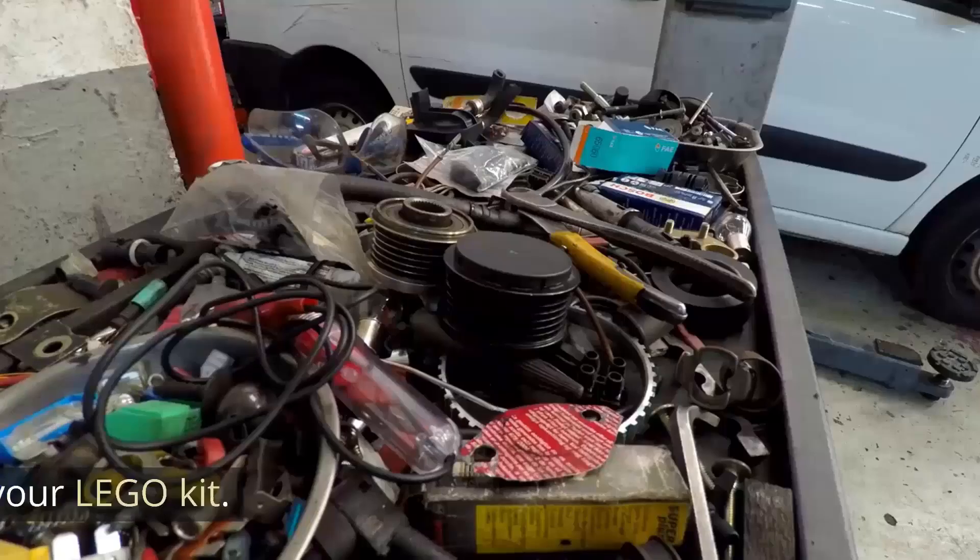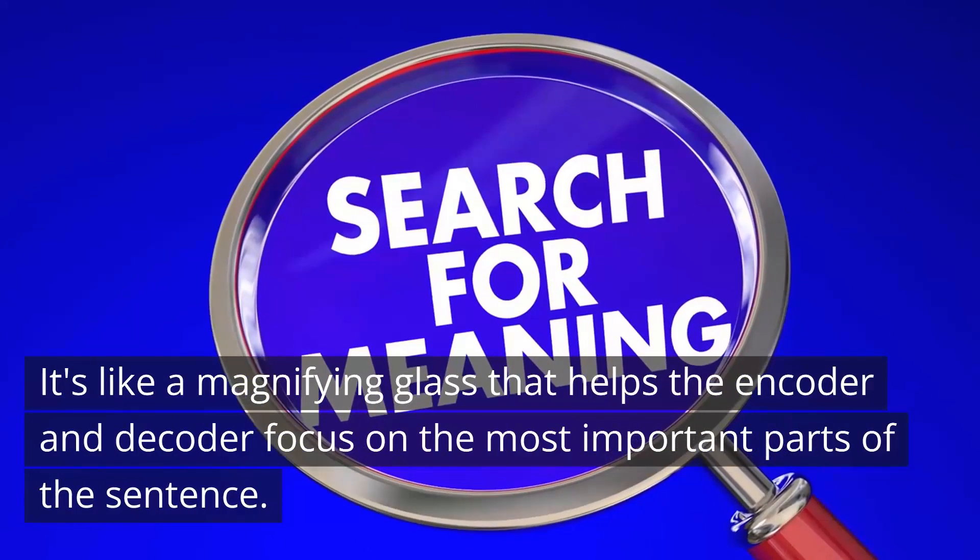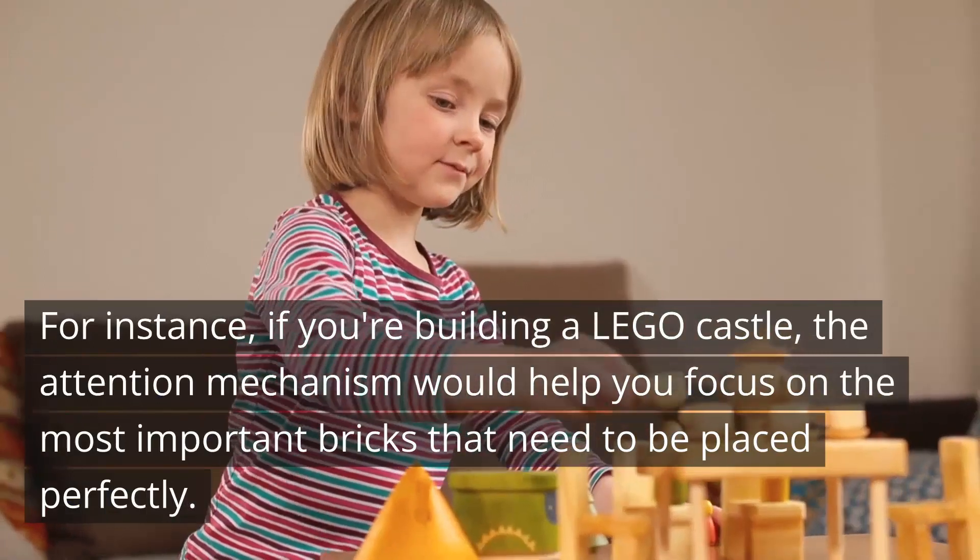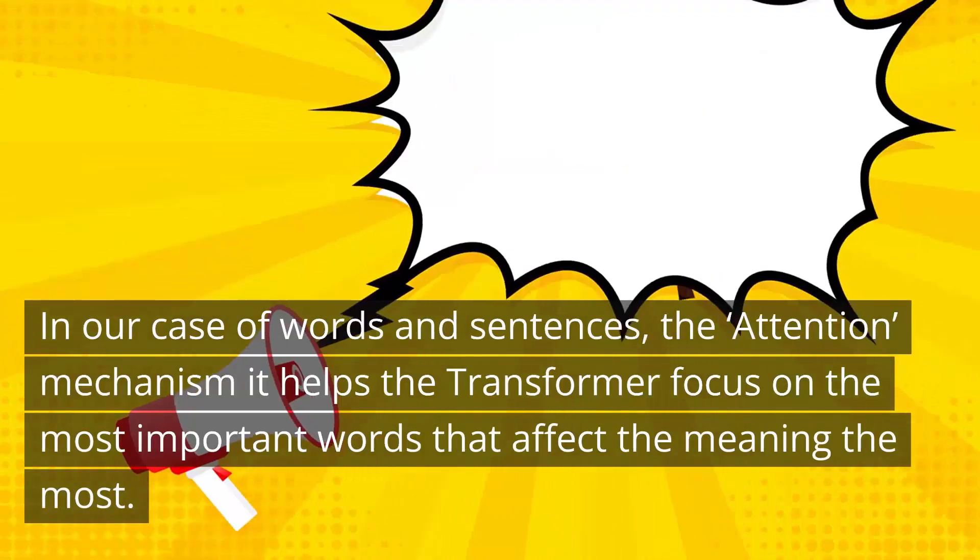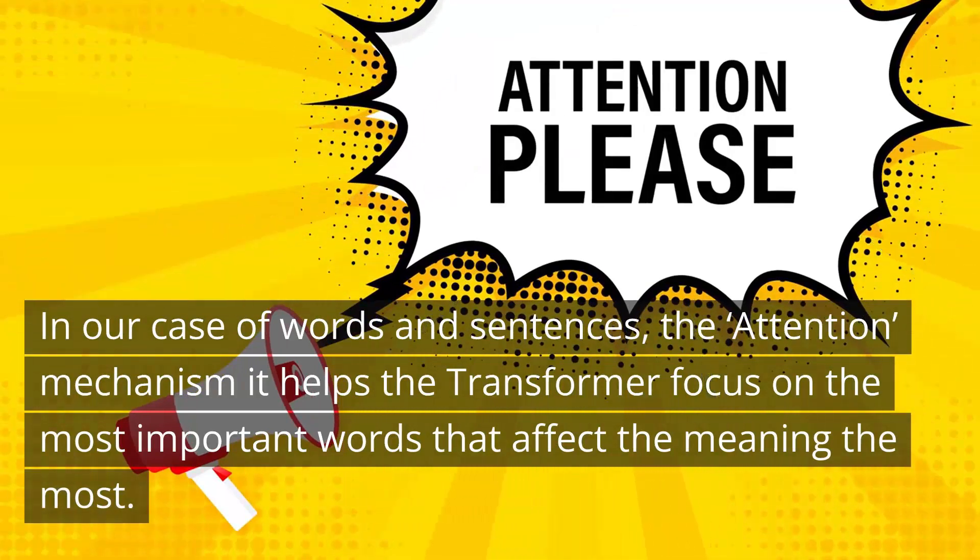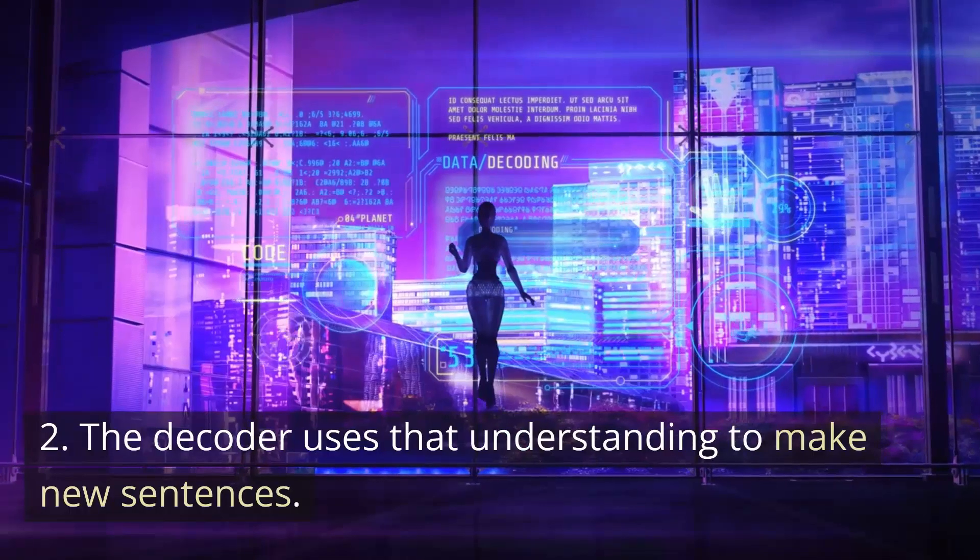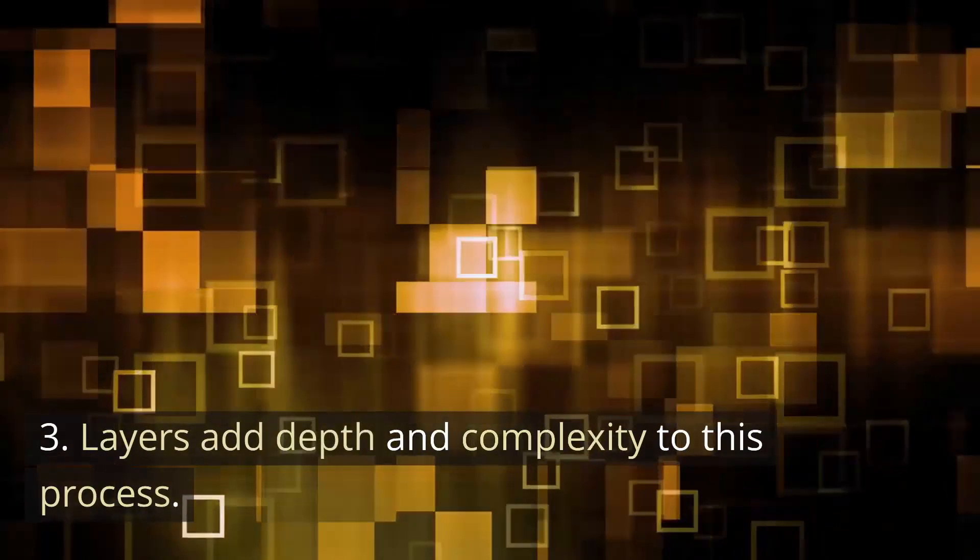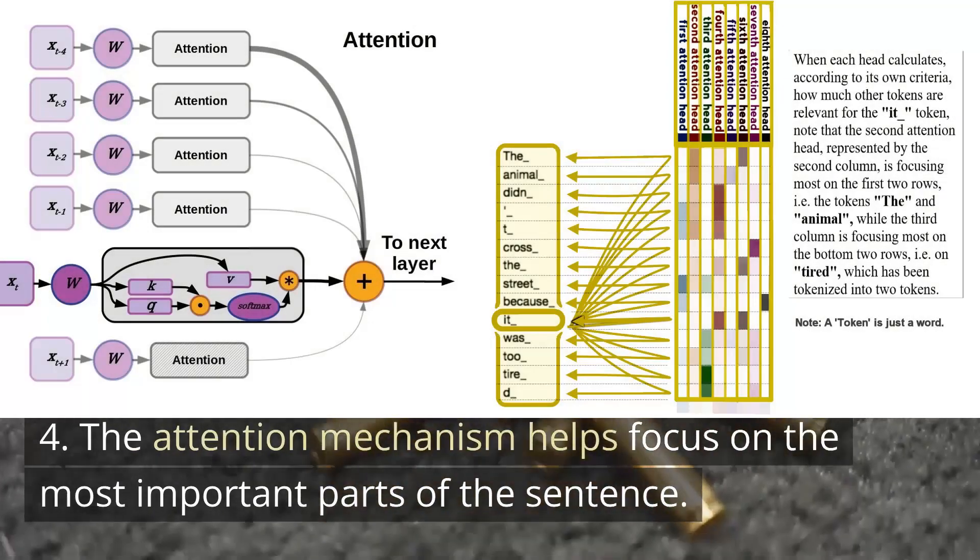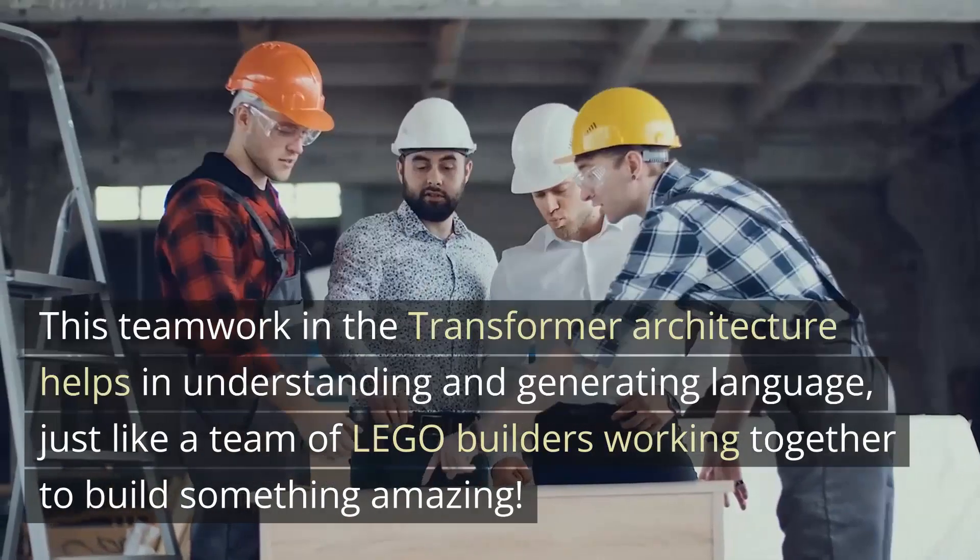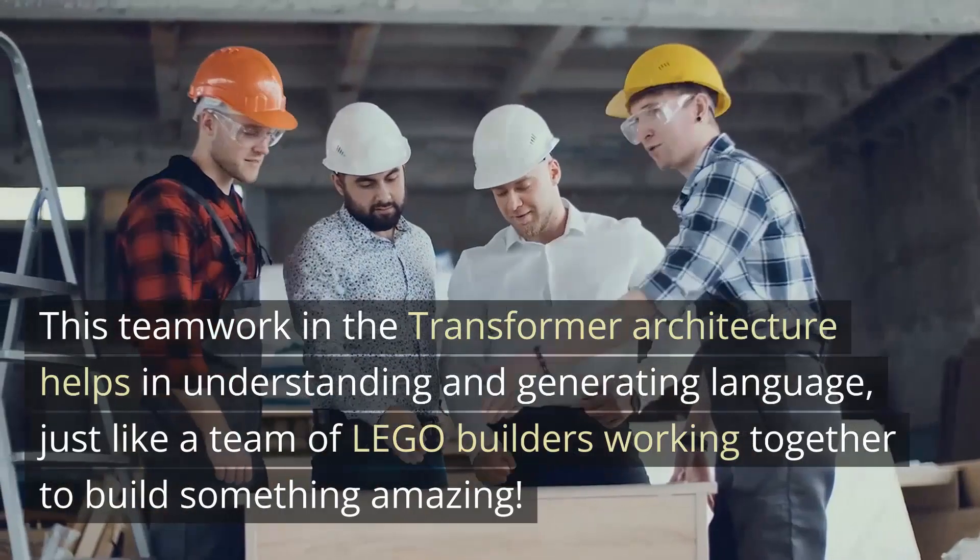And finally, the attention mechanism. This is a special tool in your LEGO kit. It's like a magnifying glass that helps the encoder and decoder focus on the most important parts of the sentence. For instance, if you're building a LEGO castle, the attention mechanism would help you focus on the most important bricks that need to be placed perfectly. In our case of words and sentences, the attention mechanism helps the transformer focus on the most important words that affect the meaning the most. So to encapsulate it all together, the encoder examines and understands each word. The decoder uses that understanding to make new sentences. Layers add depth and complexity to this process. The attention mechanism helps focus on the most important parts of the sentence. This teamwork in the transformer architecture helps in understanding and generating language, just like a team of LEGO builders working together to build something amazing.